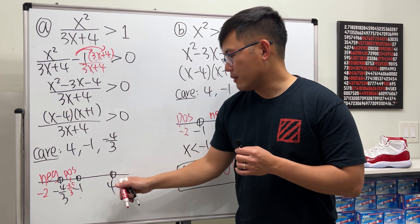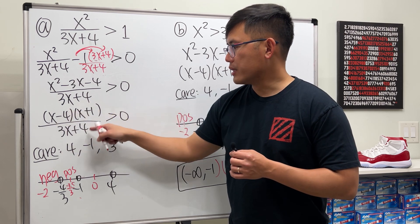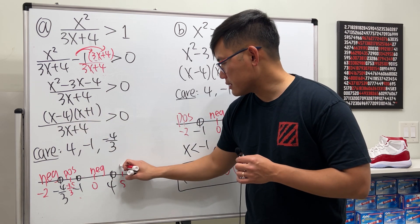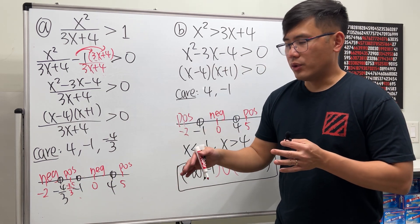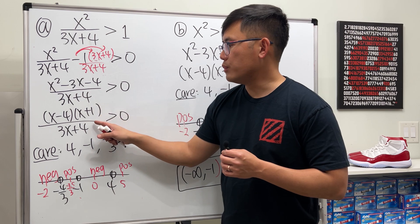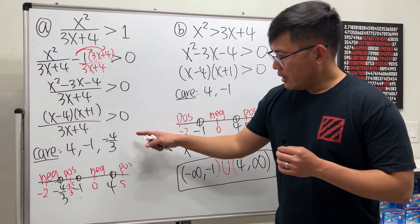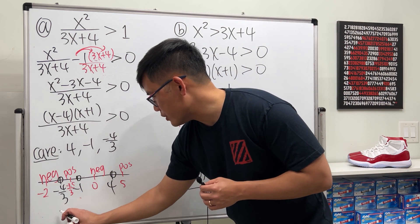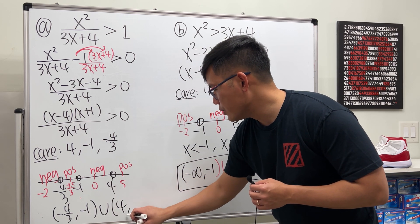Pick x = 0 (between -1 and 4): (0 - 4) = negative, (0 + 1) = positive, (3(0) + 4) = positive — overall negative. Pick x = 5 (greater than 4): all three factors positive — overall positive. We want the positive regions: (-4/3, -1) and (4, ∞). In interval notation: (-4/3, -1) ∪ (4, ∞).